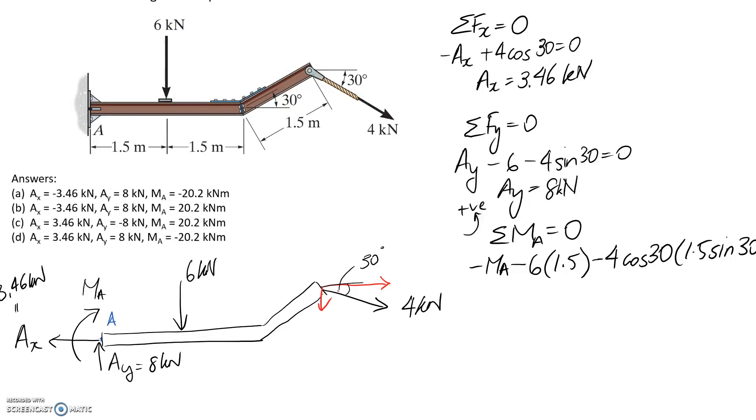Now we'll consider the vertical part here. The size of it is going to be 4 sin 30 degrees, and then we need to multiply it by the distance from its line of action all the way back to A. So this horizontal distance in here, the total distance from here all the way back is going to be 1.5 plus 1.5, plus we need this extra little bit in here, which is the horizontal side of that triangle, which we can get from the cos of the angle. The last thing that we need is the direction, so this vertical part is going to also try and push clockwise, so it's going to be negative.